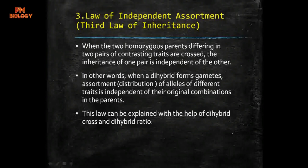This law can be explained with the help of dihybrid cross, and the appearance of new combinations in the generation proves this law. Many genes are located on one chromosome and are called linked genes; they pass through gametes in the form of linkage groups. However, recombinations are due to crossing over that takes place during meiosis. Therefore, the law of independent assortment is applicable only for traits located on different chromosomes, and is not as universally applicable as the other laws.